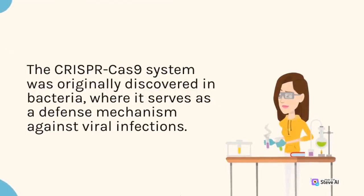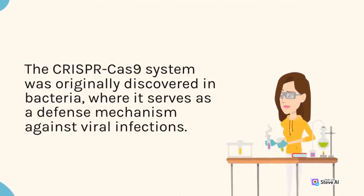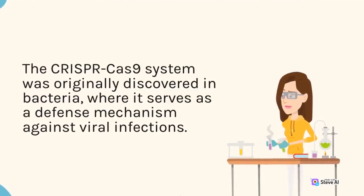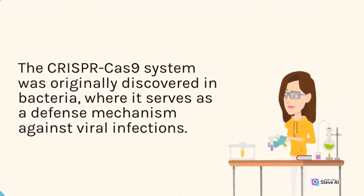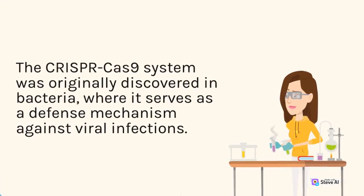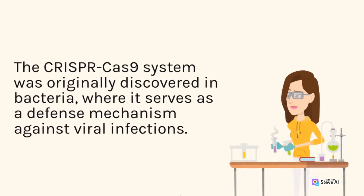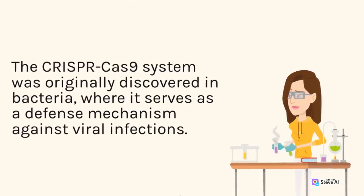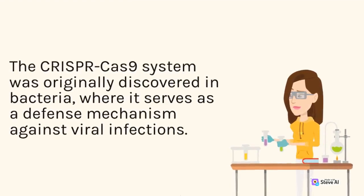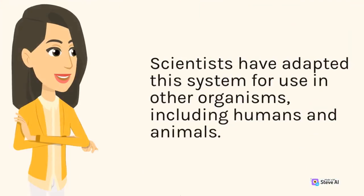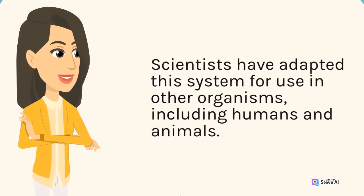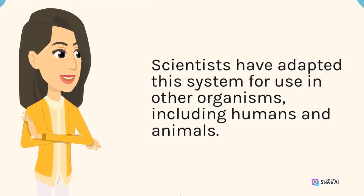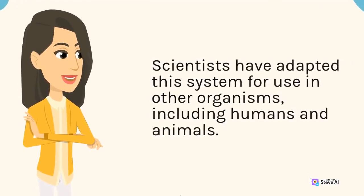The CRISPR-Cas9 system was originally discovered in bacteria, where it serves as a defense mechanism against viral infections. Scientists have adapted this system for use in other organisms, including humans and animals.